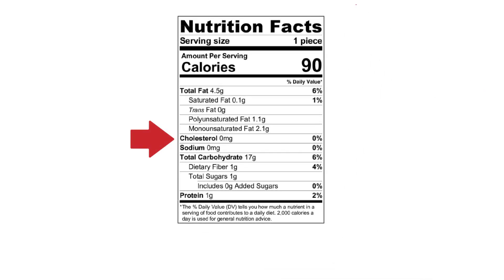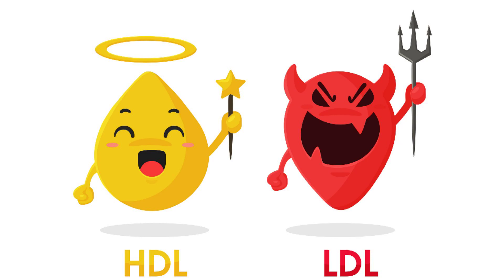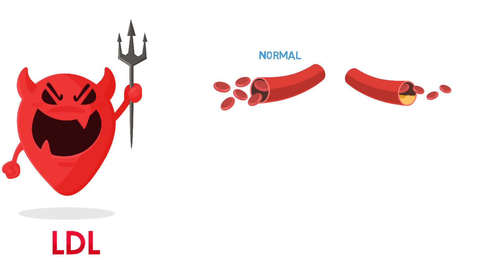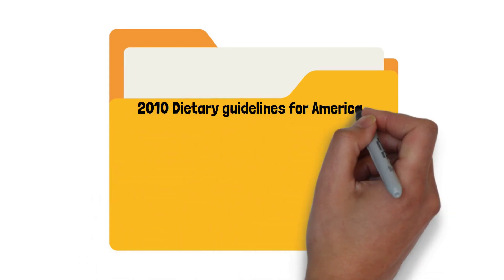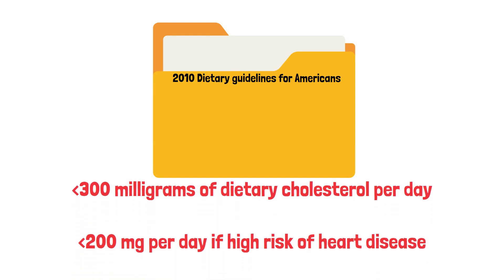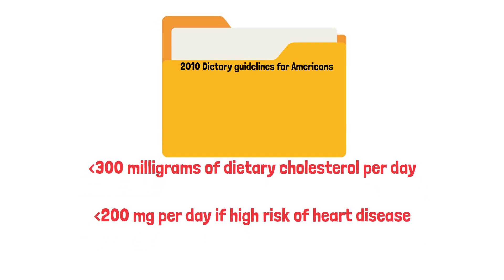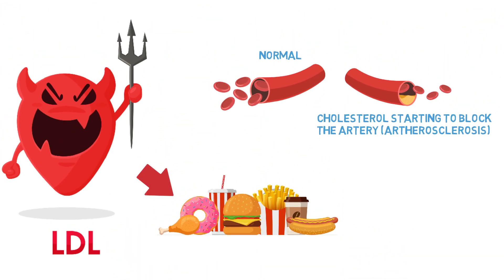Next let's talk briefly about cholesterol — be aware that there is good and bad cholesterol as there is good and bad fat, however here we will strictly talk about bad cholesterol. Cholesterol can begin to block arteries, leading to atherosclerosis, which narrows the arteries and increases the risk for heart attacks, stroke and peripheral artery disease. The 2010 Dietary Guidelines for Americans suggest limiting dietary cholesterol to 300 mg per day, or less than 200 mg per day if you are at high risk of heart disease. However, since bad dietary cholesterol is largely contributed to by bad fat, you will not need to worry as much if your weight loss diet is already limiting these fats.